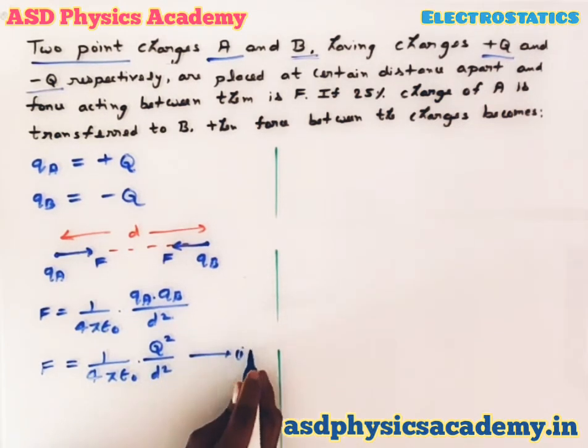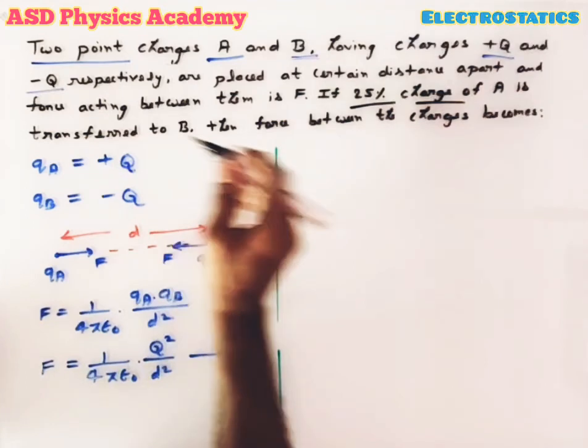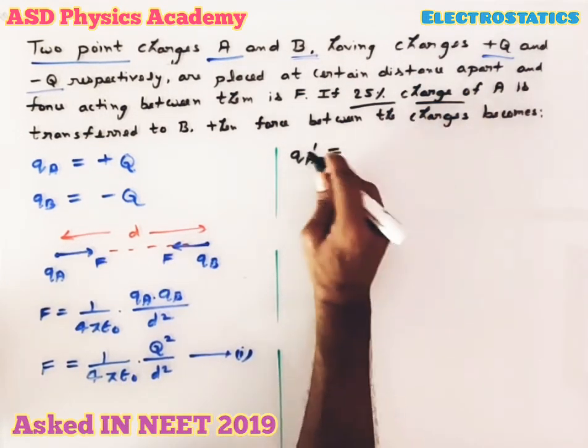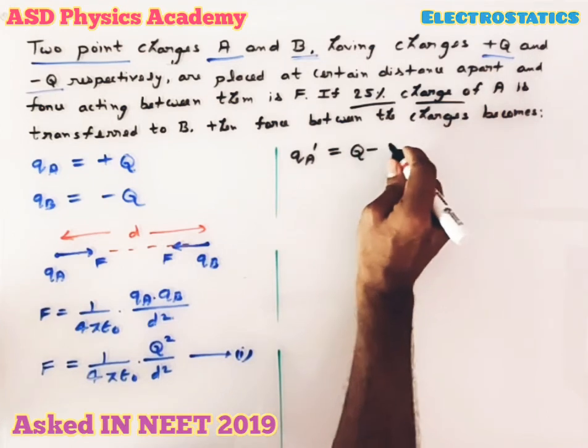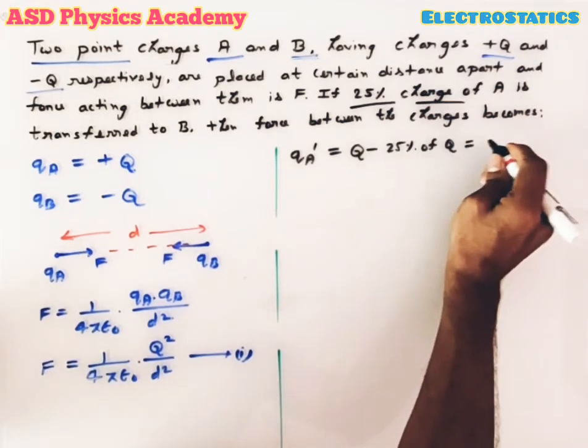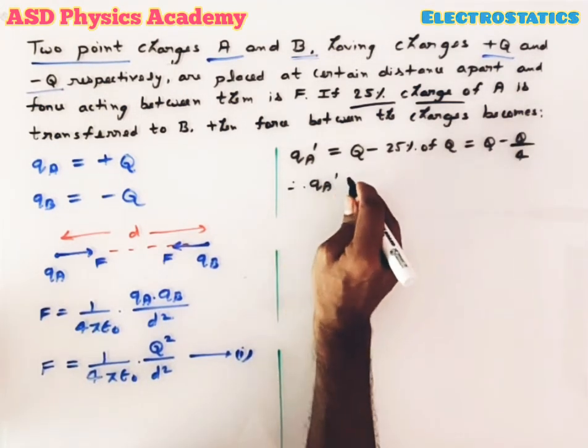Now 25 percent charge is transferred from A to B. That means when 25 percent charge will be removed from A, it will be q - 25% of q, that means q - q/4. Hence qa' = 3q/4.